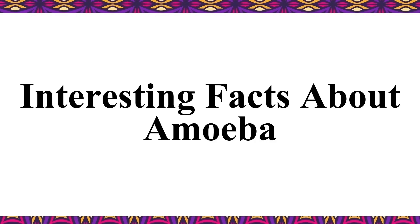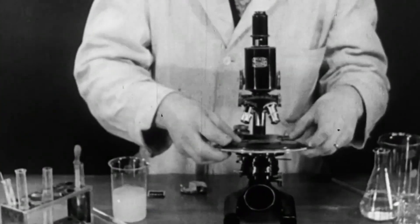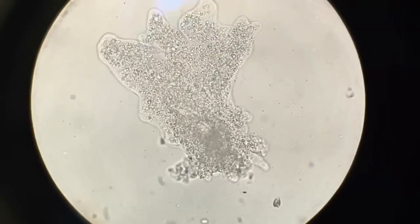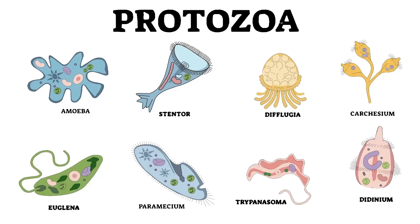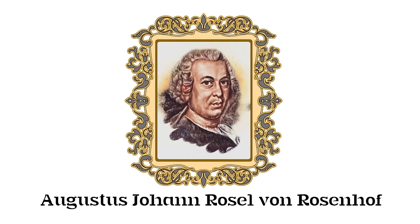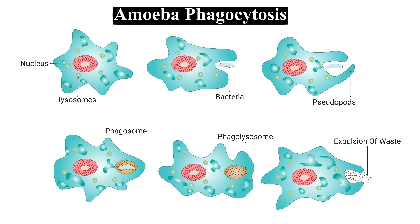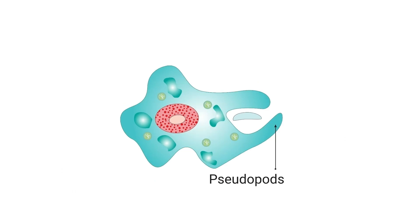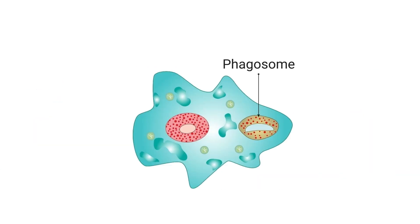Interesting facts about amoeba. Amoeba is a fascinating organism. Amoeba belongs to the genus Protozoa, which are unicellular eukaryotes with membrane-bound cell organelles. Augustus Johann Rosa von Rosenhoff first discovered it in 1757. Amoeba consumes food through the process of phagocytosis. Amoeba usually eats other bacteria and microbes, and digestion takes place within the cell itself.